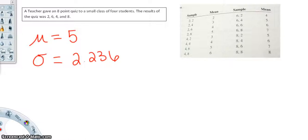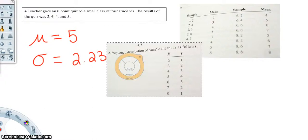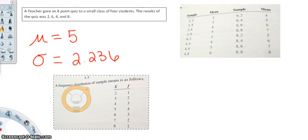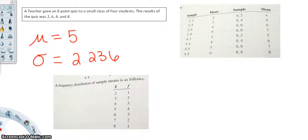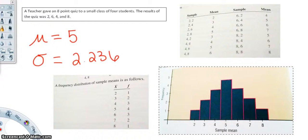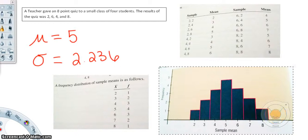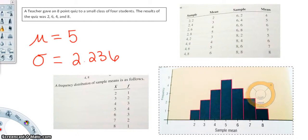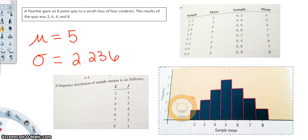We can find the frequency of all these sample means in our sample distribution. The frequency distribution of sample means shows means of 2, 3, 4, 5, 6, 7, 8, with frequencies of 1, 2, 3, 4, 3, 2, 1. You can already see it's going to look like a bell curve when we make the histogram. Here is the frequency chart — notice that even though it's a histogram, you can see a bell curve forming, indicating a normal distribution of the sample means.